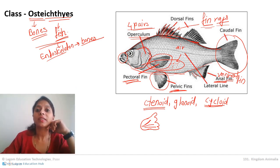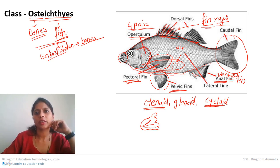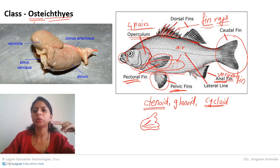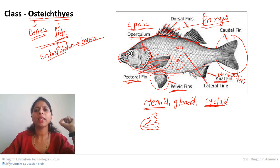The circulatory system is a closed type, as in all vertebrates. The heart is two-chambered: sinus venosus and conus arteriosus are the two chambers. The RBCs are biconcave and nucleated, and they are red because they contain hemoglobin.